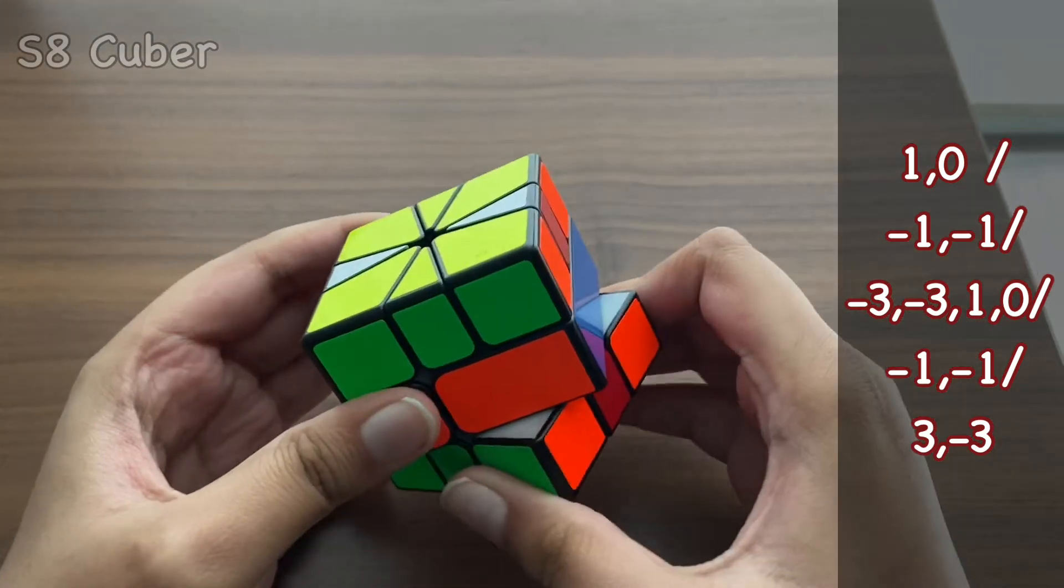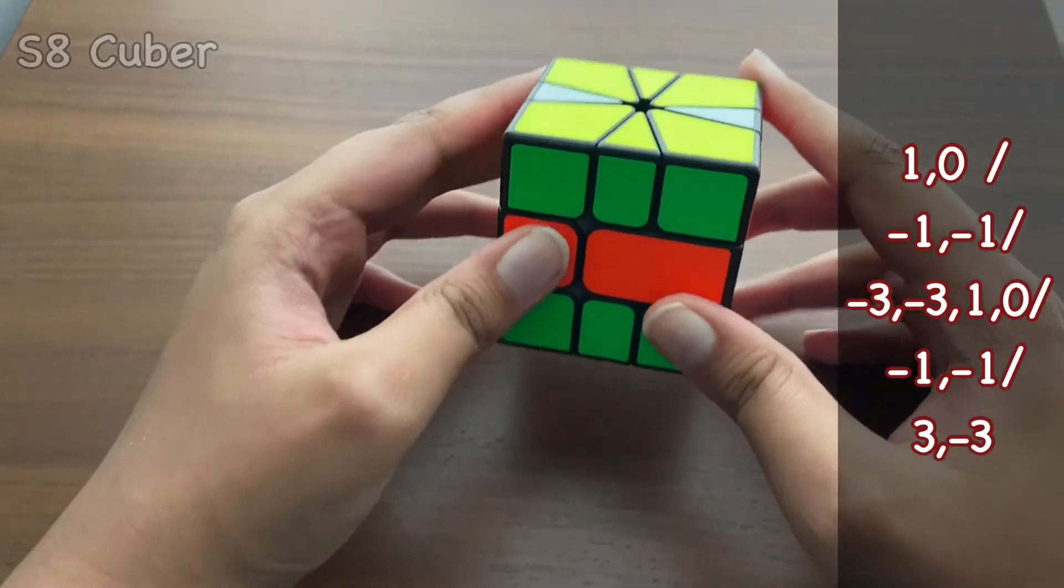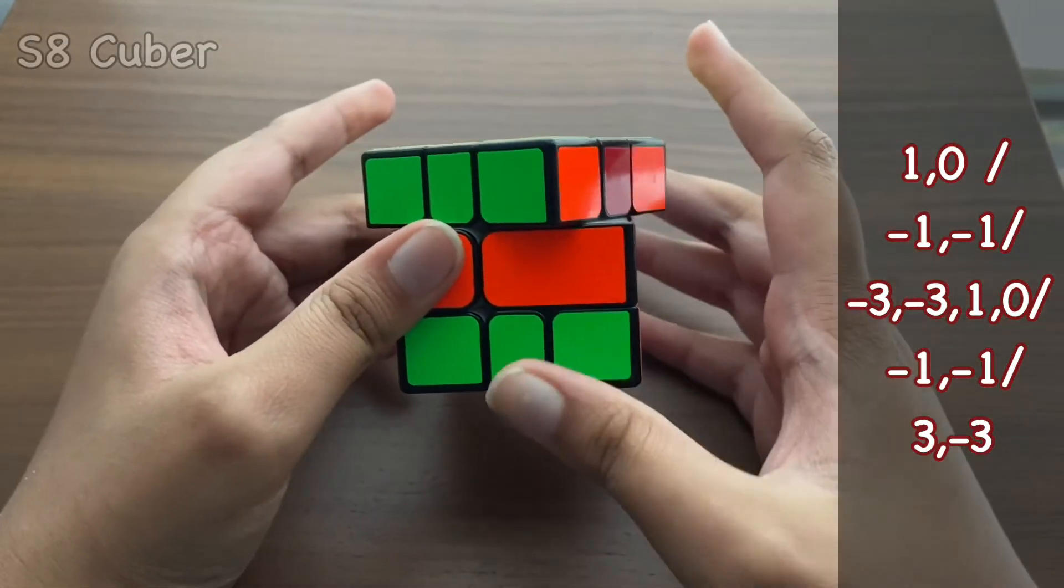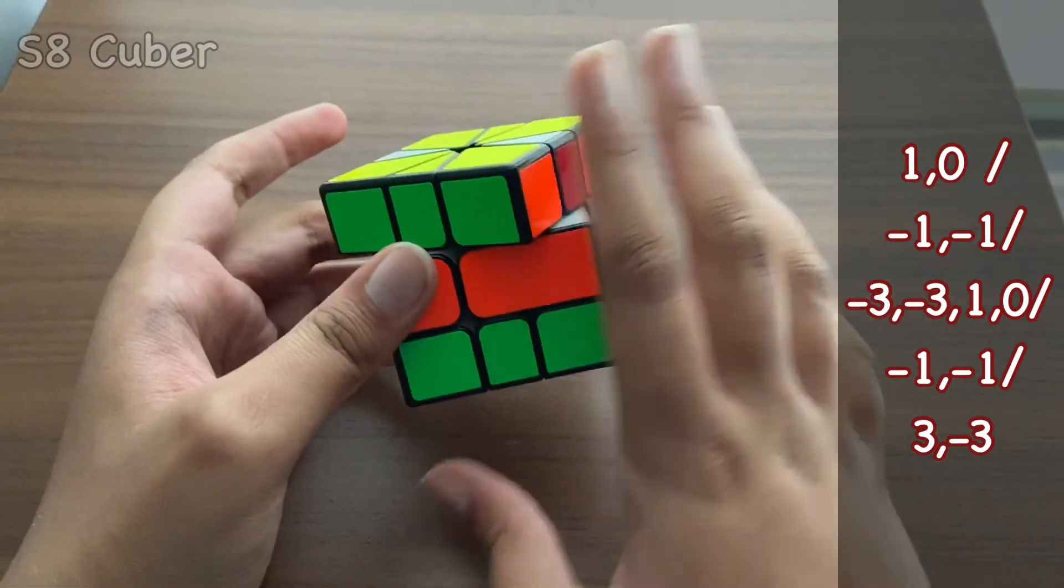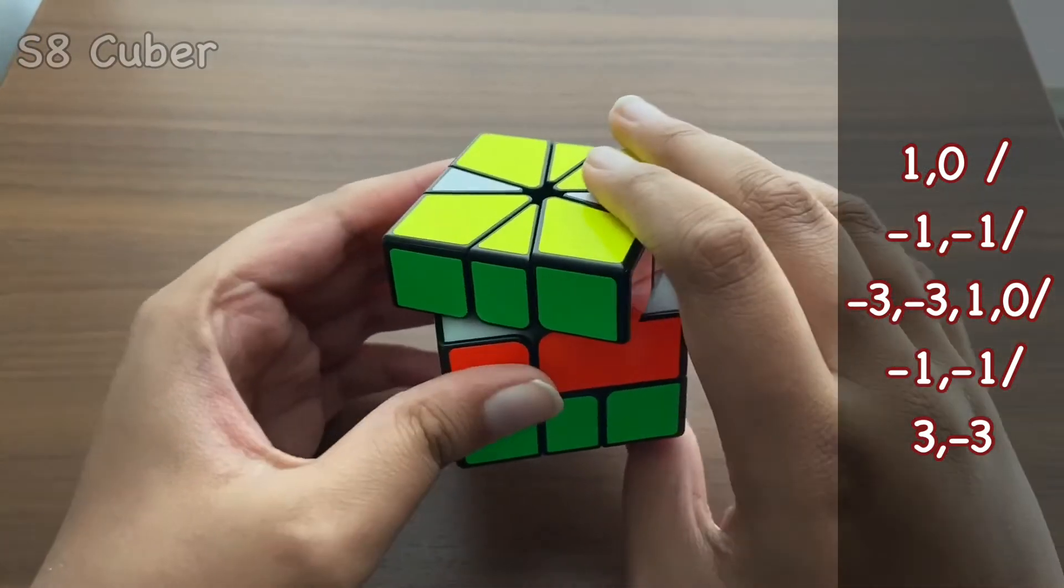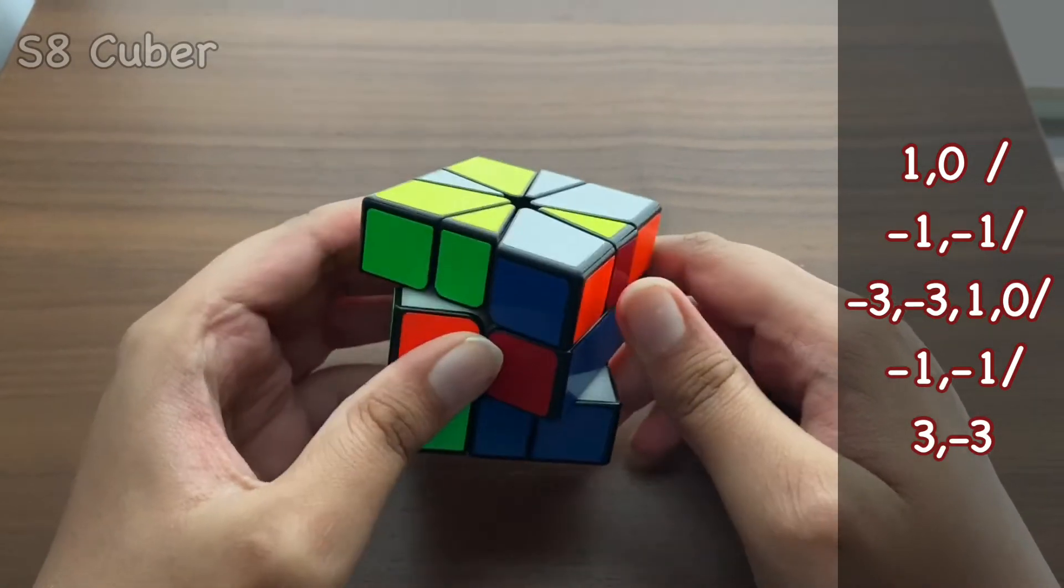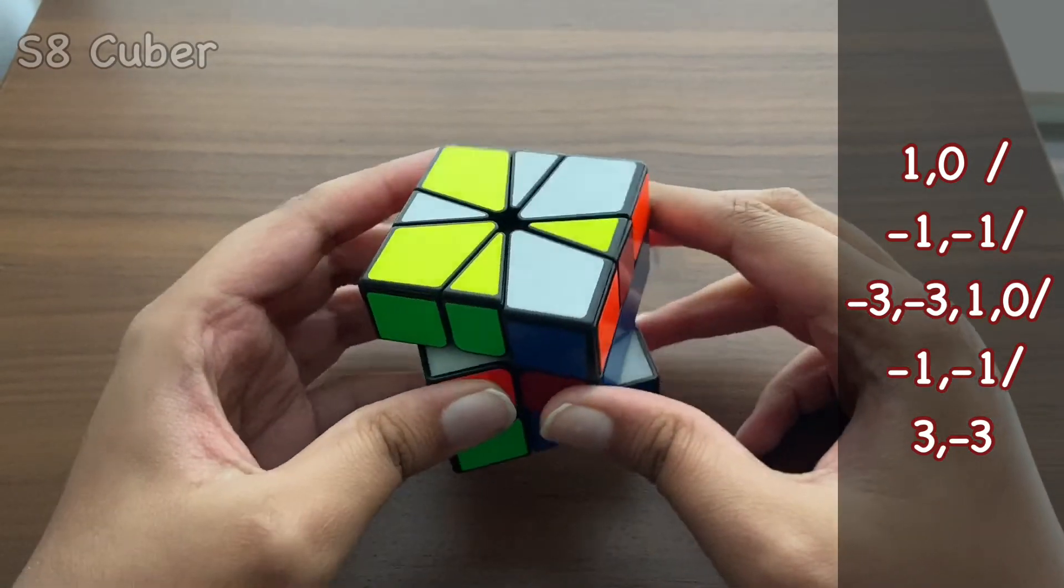Now it's a bit weird, but yeah. So then doing a 3 and then a minus 3, too. Then we're going to be doing a 1, 0 on the bottom there. Zero means doing nothing if you have not understood it yet. Then a slash.